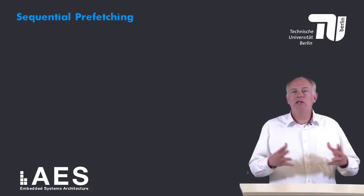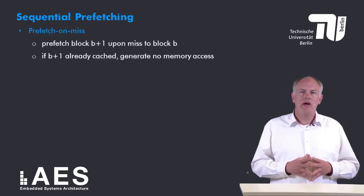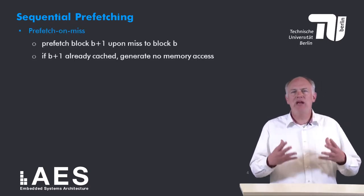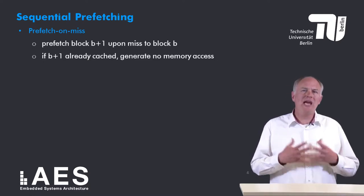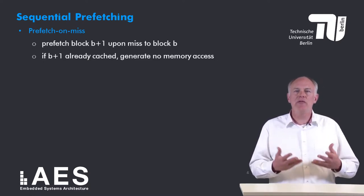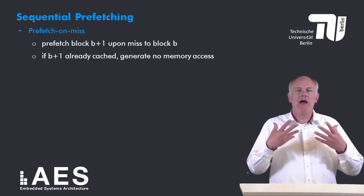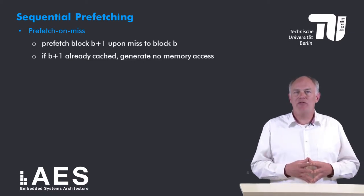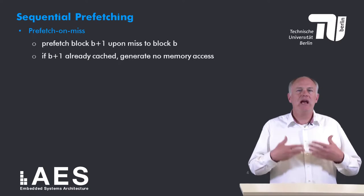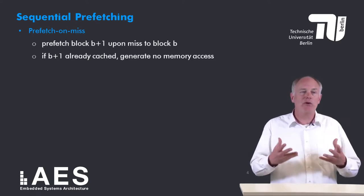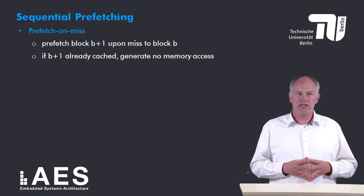I will discuss two sequential prefetching schemes. The first scheme is prefetch on miss. In this scheme we issue a prefetch to the next block B plus one when we have a miss to block B. Of course, if the next block B plus one is already cached then we generate no prefetch.